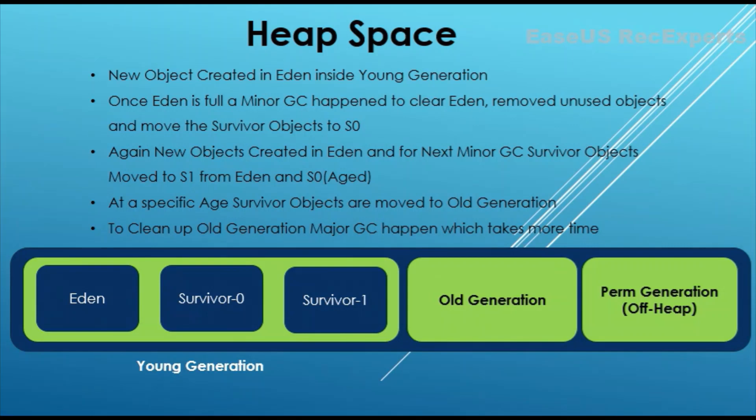Survivors will be moved from Eden to Survivor 0 space, making Eden space empty again. New objects will then start filling up Eden space again. Once Eden space is full again, another minor GC will happen, and all survivor objects will be moved to Survivor 1. Not only from Eden but from Survivor 0 as well — any components no longer referenced will be removed by the garbage collector.